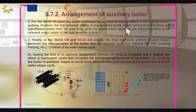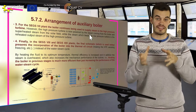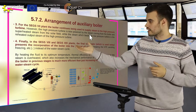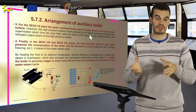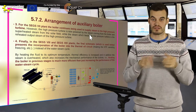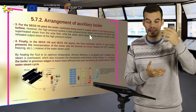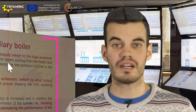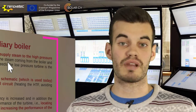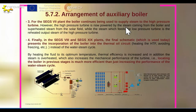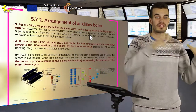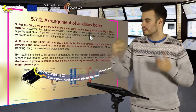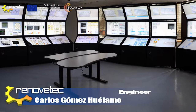Now we have a third possibility, and this is in the SEGS-7 plant. The auxiliary boiler was considered in the same position — that is, it supplies overheated steam to the high-pressure turbine. However, the low-pressure turbine is fed by the reheated steam from the output of the high-pressure turbine. So the final position of the auxiliary boiler is going to be considered in SEGS-8, 9, and 10 plants.